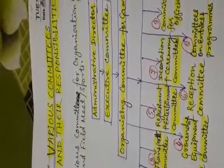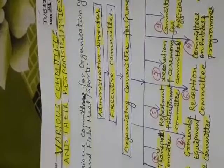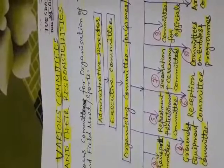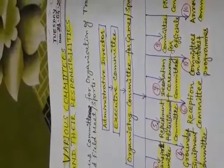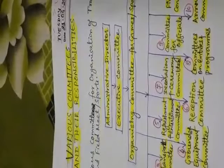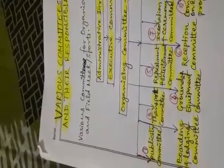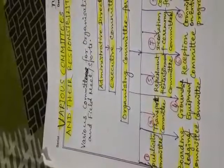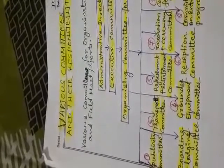For organizing sports events, various committees are formed for systematic and smooth conduct of competitions and tournaments. The general committee is headed by an administrative director, under whom the executive committee performs its duties. The organizing committee for games and sports events works under the executive committee. The duties of these committees are categorized as pre-tournament work, during-tournament work, and post-tournament work.